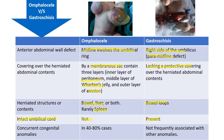Regarding concurrent congenital anomalies, they are associated with 40 to 80% of cases of omphalocele, and sometimes omphalocele is associated with various syndromes and various trisomies. While in gastroschisis, it is not frequently associated with any other congenital anomalies. So this is about the anterior abdominal wall defects — omphalocele and gastroschisis. Thank you.